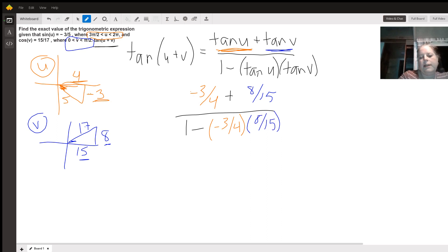And now when I look at this, I see that my common denominator between 4 and 15 is 60. So I like to multiply the top and the bottom by 60 so I can get rid of those fractions inside the fractions.